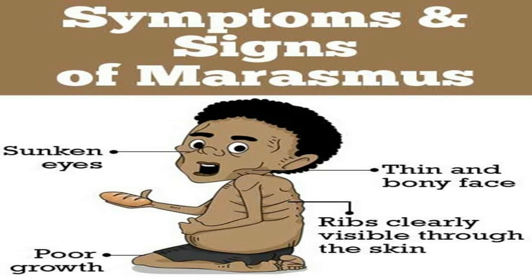The external signs of marasmus include visible wasting of fat and muscle, prominent skeleton, head appearing large for the body, face appearing old and wizened, dry loose skin, dry brittle hair or hair loss, sunken fontanels in infants, and lethargy, apathy, and weakness. Weight loss of more than 40% is expected, and BMI should be below 16.